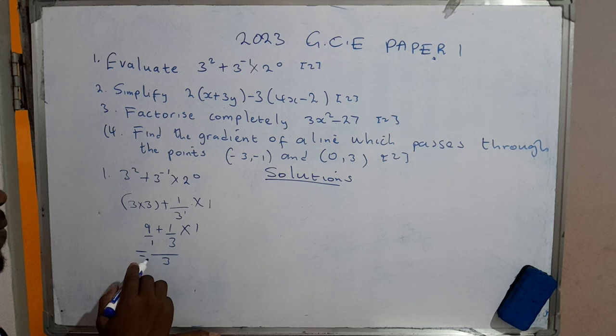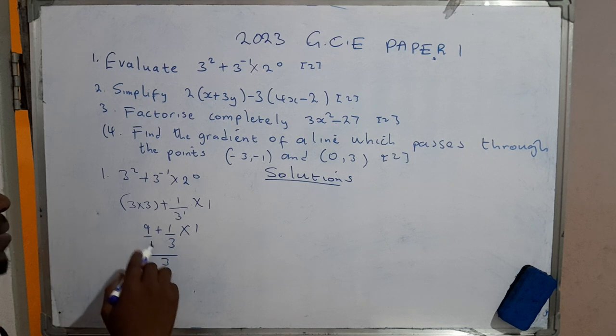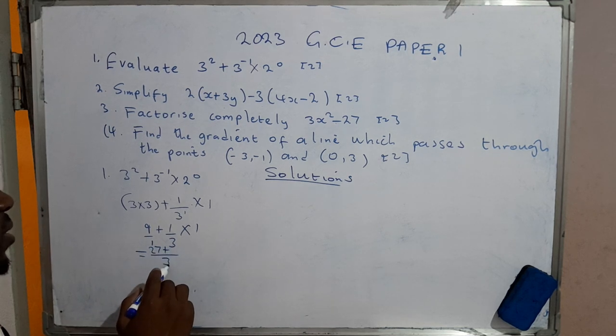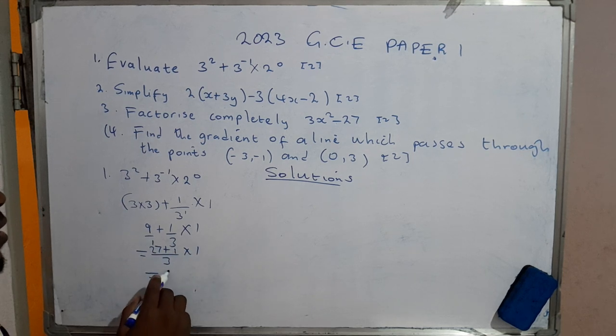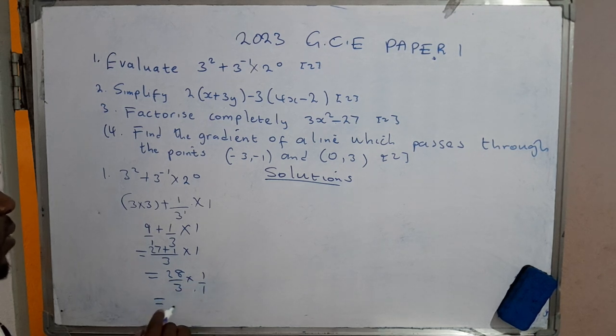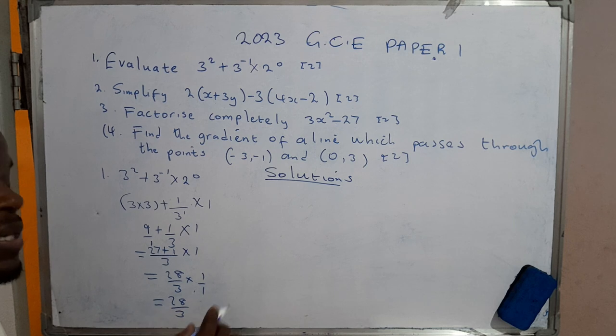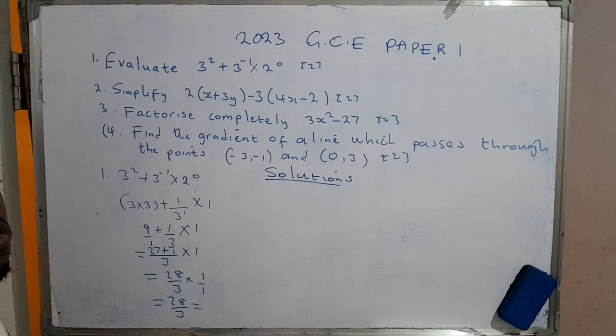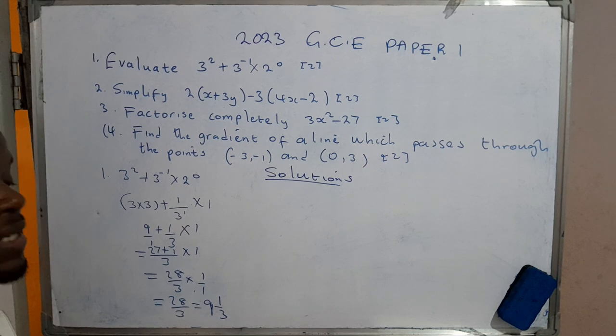Here we have times 1. When you have mixed operations, you simply start from the left. We resolve these two - you find the lowest common multiple of the denominator 1 and 3. 1 into 3 is 3. 3 × 9 is 27, plus 3 into 1 is 1. That gives us 28 over 3 × 1, which gives us 28 over 3. That's the final answer, and we are done with the first question.